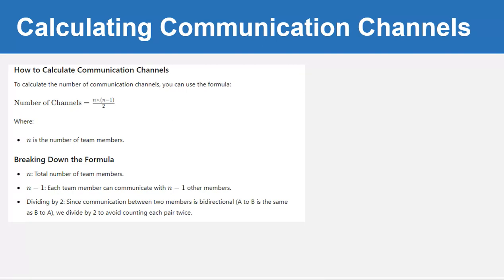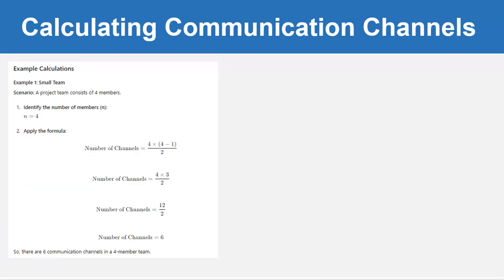To calculate the number of communication channels, we use the formula: number of channels = n × (n − 1) / 2, where n is the number of team members. Breaking down the formula: n is the total number of team members; n − 1 means each team member can communicate with n − 1 other members; and we divide by 2 because communication between two members is bi-directional — A to B is the same as B to A — so we avoid counting each pair twice.